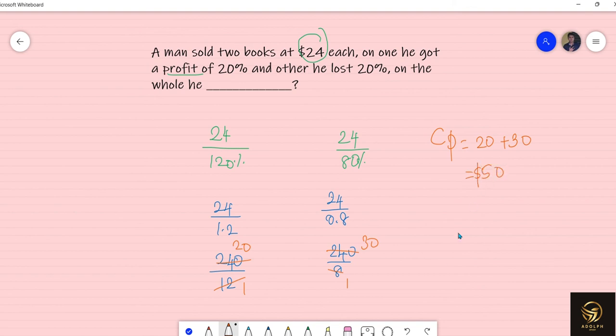What is the selling price? On each book he sold it for $24, so it is $48 total. You can compare it easily and get the value that actually he lost $2 on the whole.